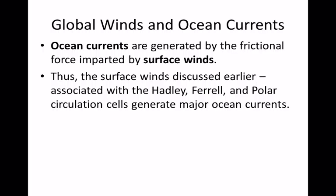Now, global winds and ocean currents. We have tides because of the moon, but we have large ocean currents because of the way wind moves water, using friction. Our ocean currents are mostly on the surface — below the surface it's still. Surface ocean currents are due to wind.